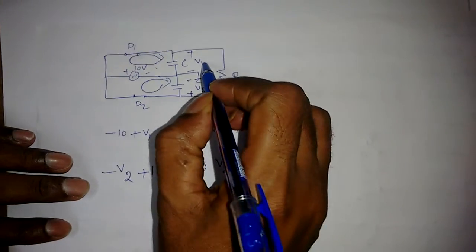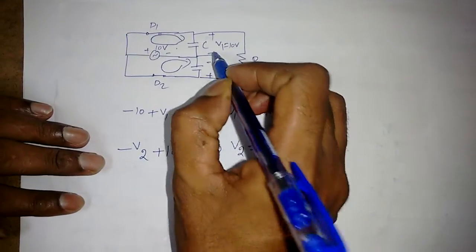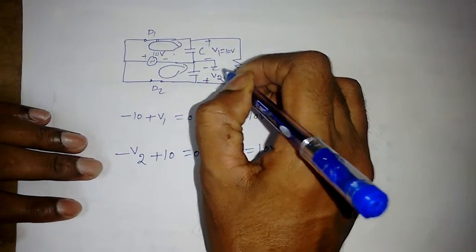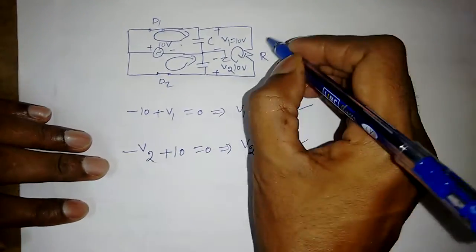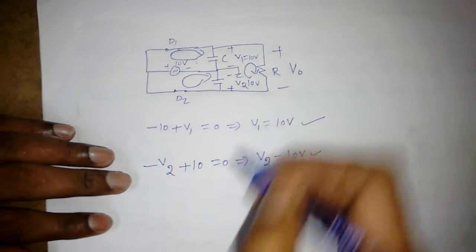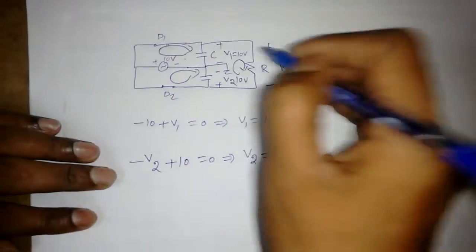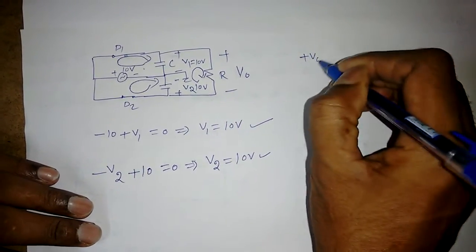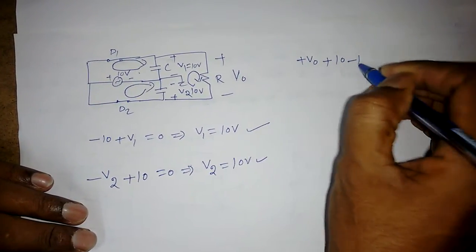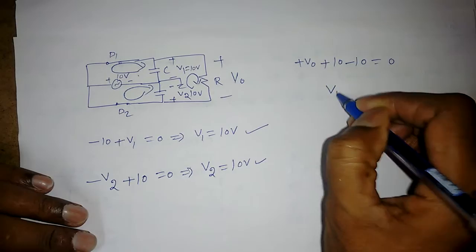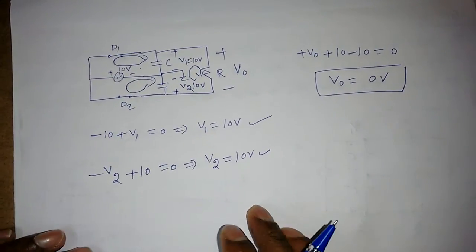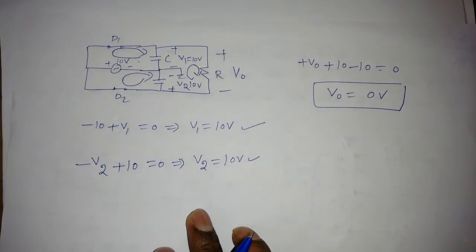But if you see, V1 is equal to 10V in this direction, but V2 is 10V in this direction. Now if you apply KVL in this loop to find V0, plus V0 plus 10 minus 10 is equal to 0. What is V0? It is simply 0V.